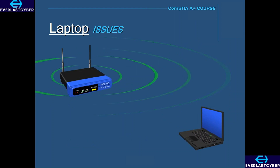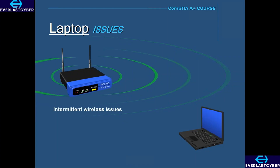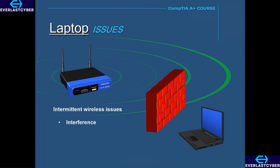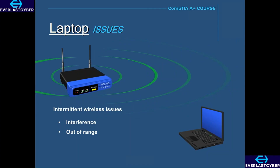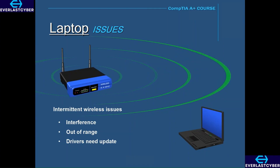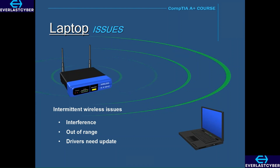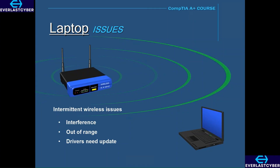All laptops have the capability of wireless networking, and a lot of times you may experience an intermittent wireless connection. This could be caused by interference between your laptop and your wireless router, or it could be that you're out of range of the wireless signal. Another issue could be that you need to update your wireless network card drivers, especially when a new operating system has been released. A common fix for intermittent wireless issues is to go to the laptop manufacturer's website and update your wireless network card drivers — this is especially common with Windows 10.